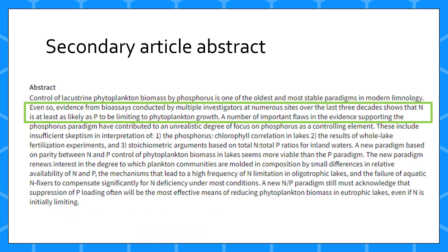In contrast, this abstract of a secondary review article specifically mentions evidence conducted by multiple investigators at numerous sites over the last three decades, which indicates the authors reviewed other primary sources for this paper rather than conducting an experiment themselves, making this a secondary article. Review articles won't always be so explicit in the abstract; they also won't be describing the particular methods used for a single experiment, as would a primary source.